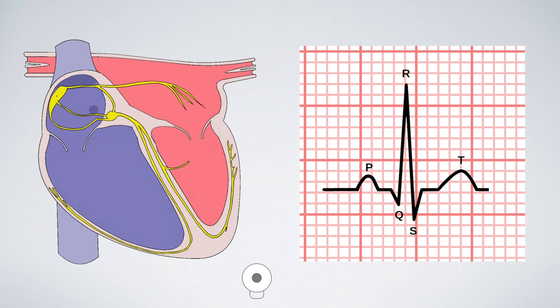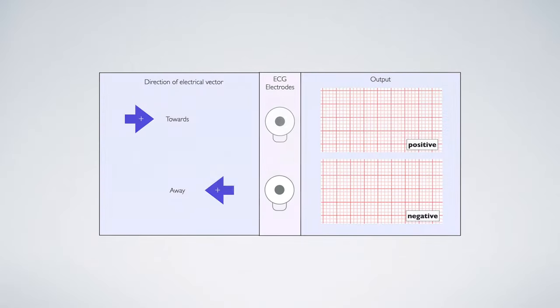But here's where things get really interesting. So those ECG electrodes that we place on the body, they record the net movement of electrical activity and we call this net movement of electrical activity a vector.